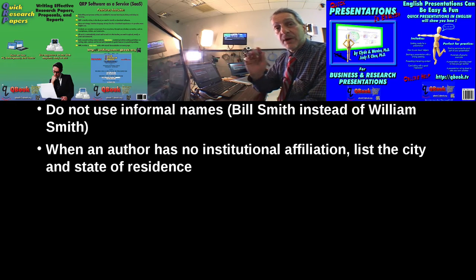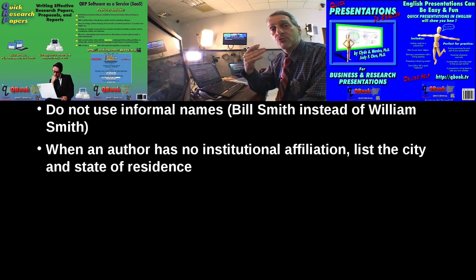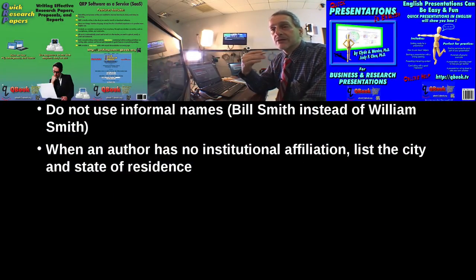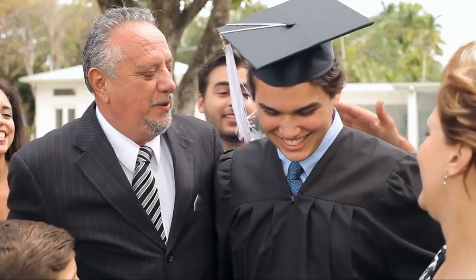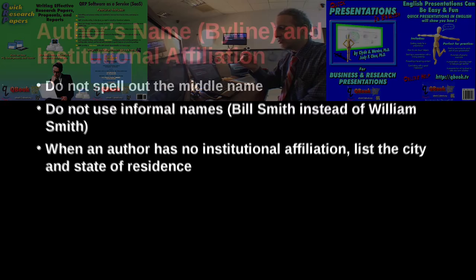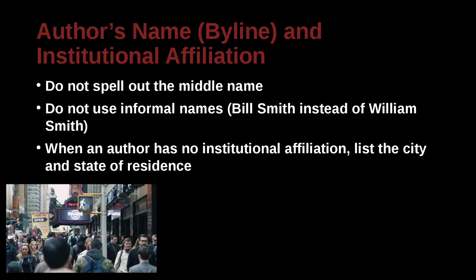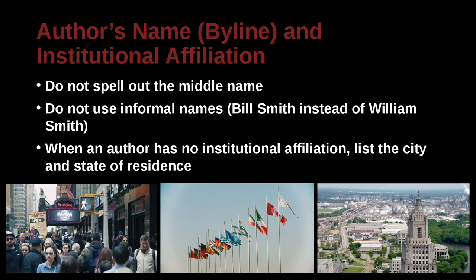It is possible that an author may write a research paper, but they don't actually work in a university. Or you may be already graduated, but you're not working somewhere yet. In that case, you would have to skip the affiliation, but you can use the residence area. So probably a city would be good enough, and a country, or a state.